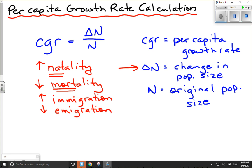So we want to add natality, subtract mortality, add immigration, and subtract emigration to get our change in population size. This could be a negative number. There's no reason you can't have a negative per capita growth rate. The population could be declining, that means we'd have a negative answer. So delta N could be positive or it could be negative.